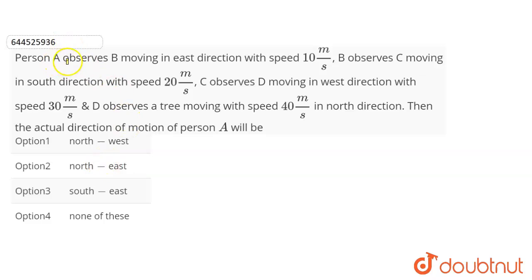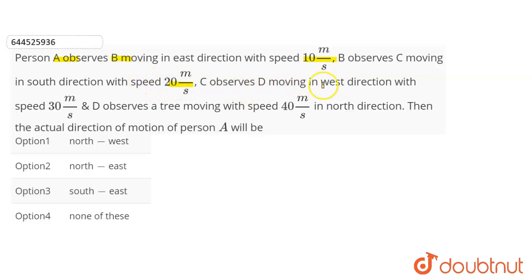A person A observes B moving in the east direction with a speed of 10 meters per second. B observes C moving in the south direction with 20 meters per second. C observes D moving in the west direction with 30 meters per second.